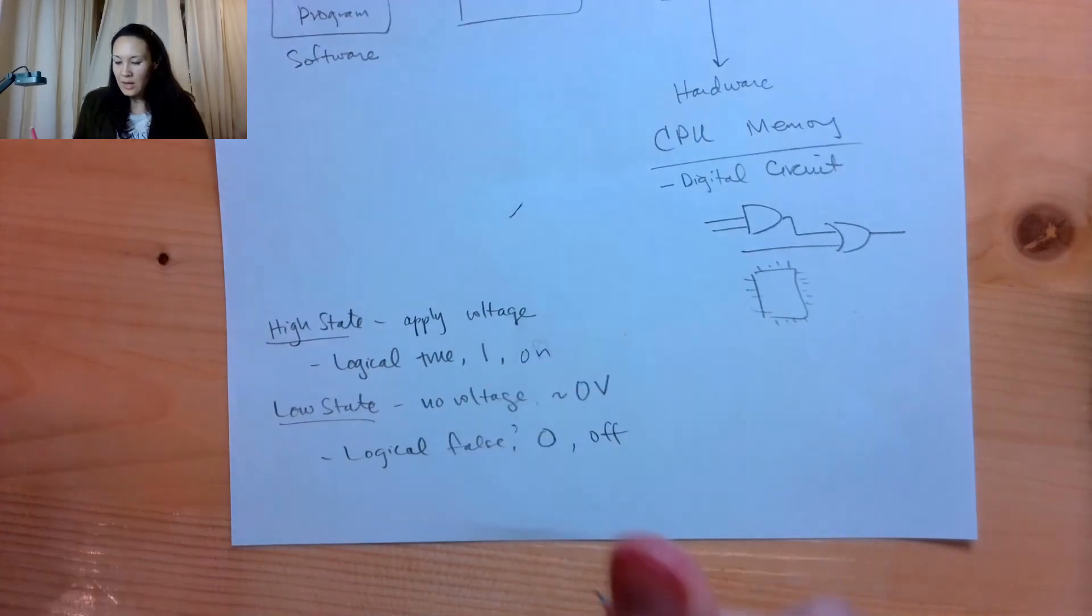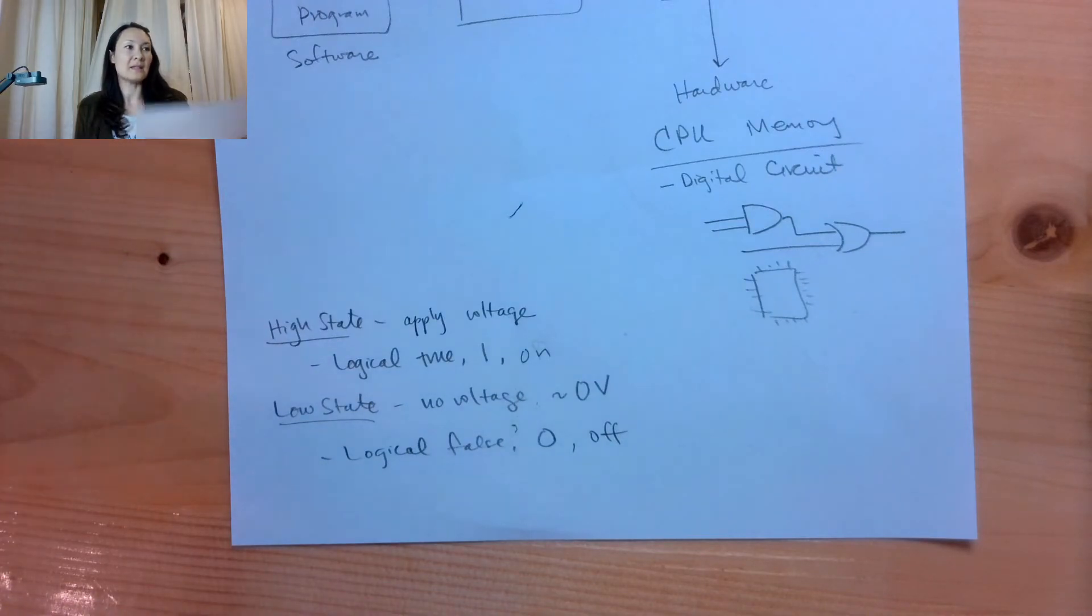So if we have basically two states, you can kind of think of it as the language of computers only has two words. It has on and off, zero volts or five volts. That means that we have to figure out a way to store all the information about everything with just a zero and a one, just with an on and an off. So that's where the binary number system comes into play.